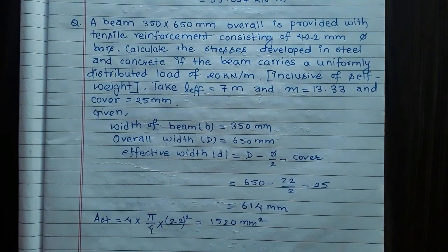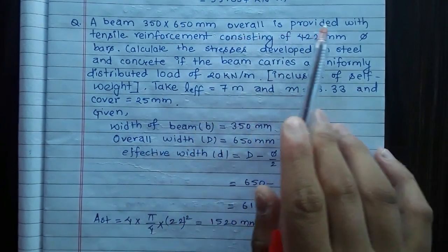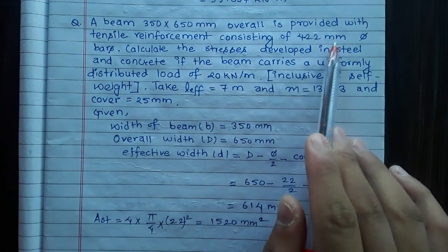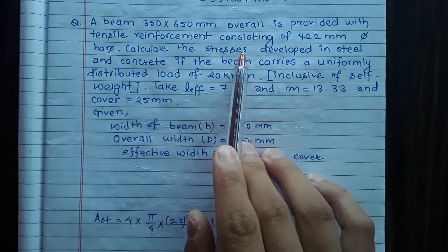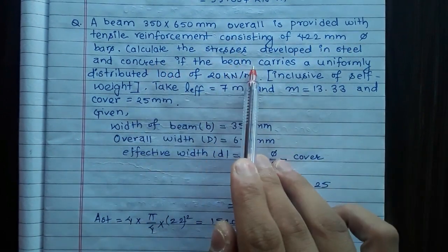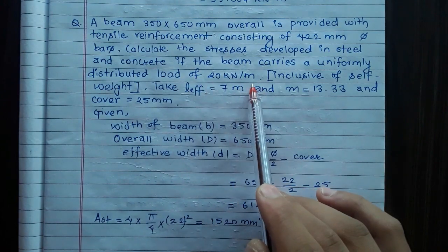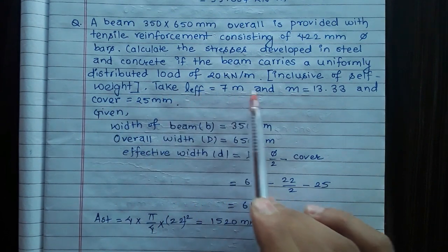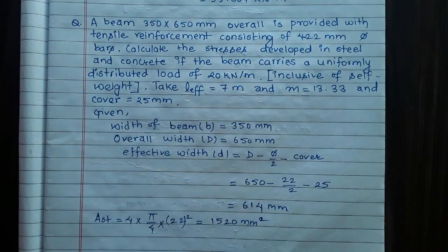A beam of 350 × 650 mm overall depth is provided with tensile reinforcement consisting of 4 bars of 22 mm diameter. Calculate the stresses developed in steel and concrete if the beam carries a uniformly distributed load of 20 kN/m inclusive of self-weight. Take effective length = 7 m, M = 13.33, and cover = 25 mm.